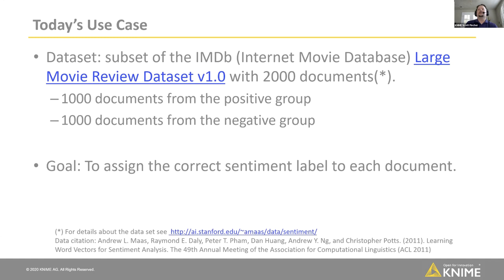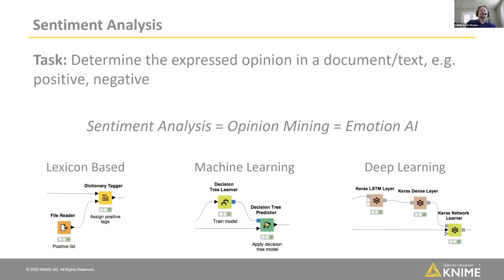We have the IMDB large movie review dataset — we're looking at a subset of 2,000 different movie reviews: 1,000 classified as positive and 1,000 classified as negative — with the goal of assigning the correct sentiment label to each document based on the text itself. Three different ways we could tackle this problem, going from simplest to most complex: a lexicon-based approach, a more standard machine learning approach, and the newer deep learning approach. The lexicon-based approach involves tagging words we know are positive or negative based on publicly available corpora like the MPQA corpus, counting positive and negative words per document, and calculating an index value giving overall positivity or negativity. It's pretty straightforward — the advantage is we don't need supervised or labeled data.